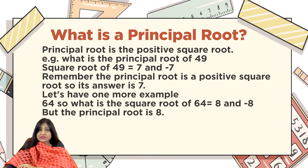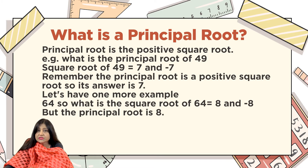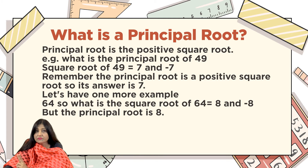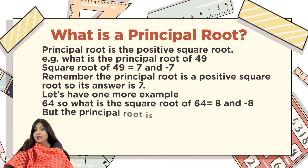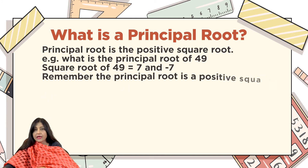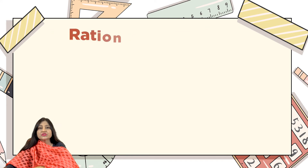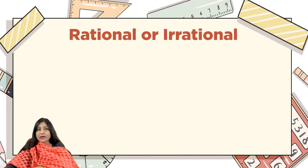Let's have one more example: the square root of 64. The two square roots are 8 and −8. But the principal root is the positive root, so the answer is 8.